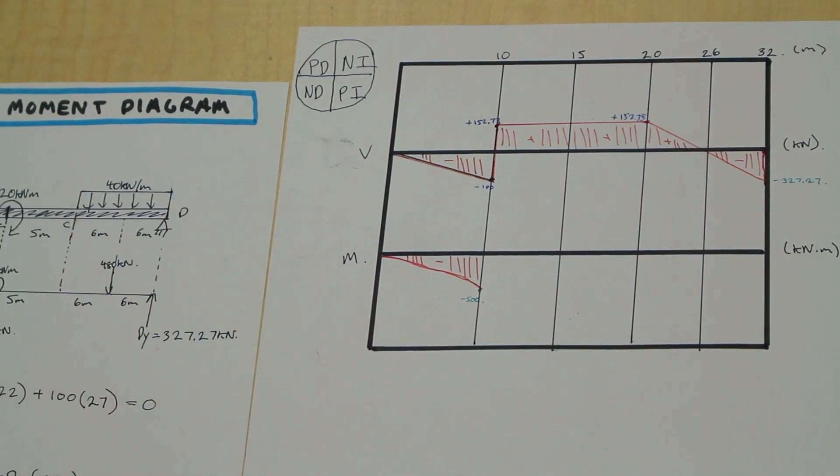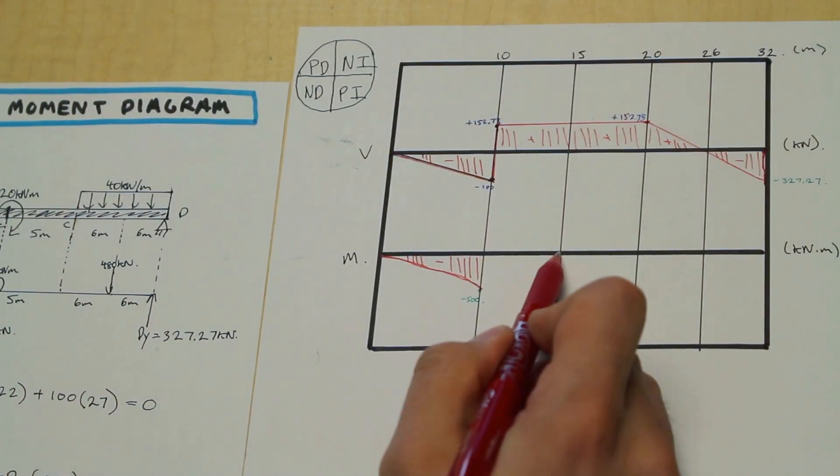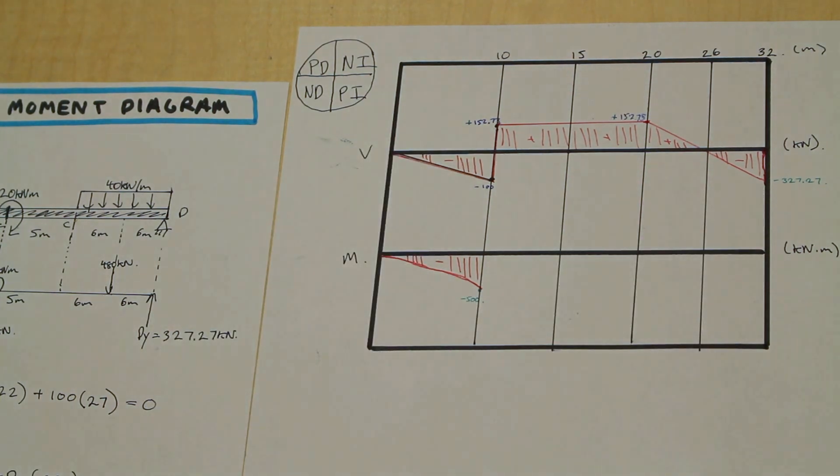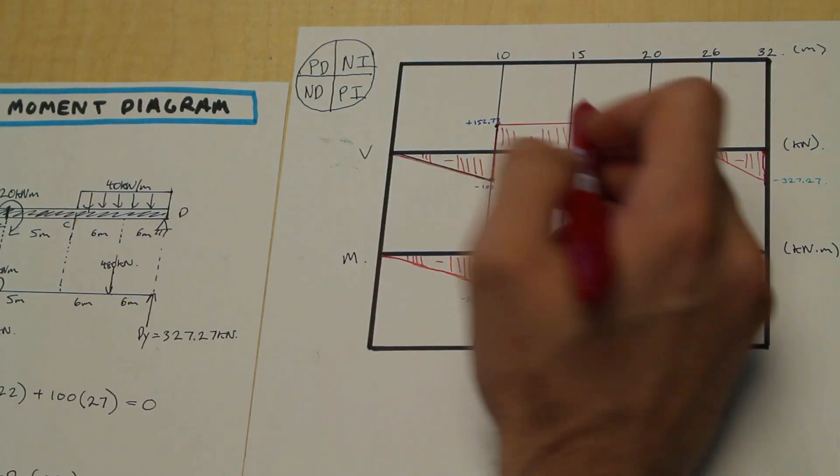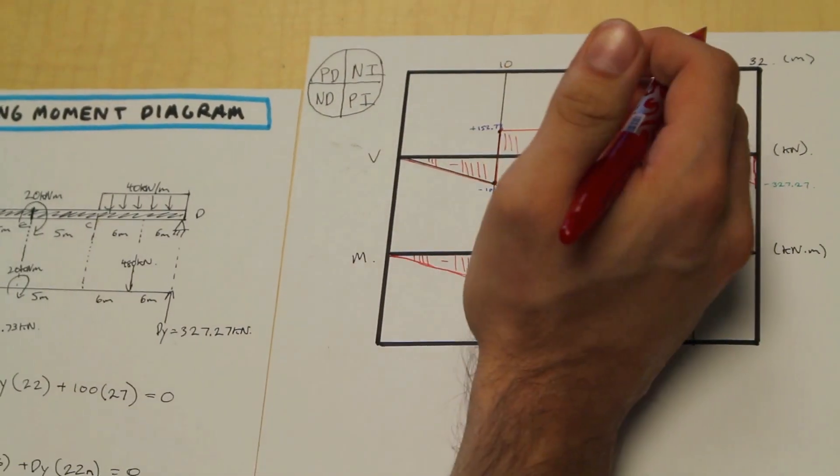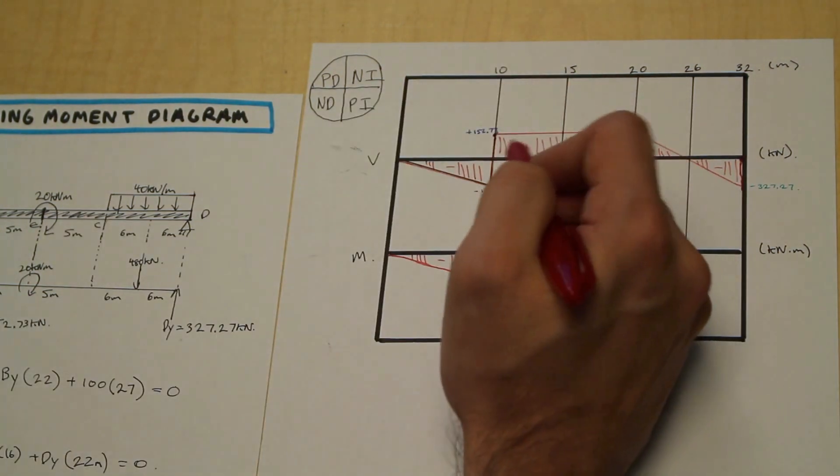Alright, let's continue. So what do we have next? Remember, we have a free moment here, and that is going to affect the moment diagram. So with that being said, we are going to go up to 15 meters, and we're going to stop, and then we're going to incorporate that free moment. So let's find this area here, right before the free moment.